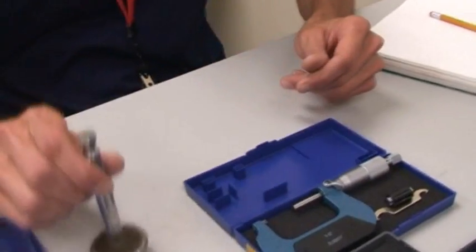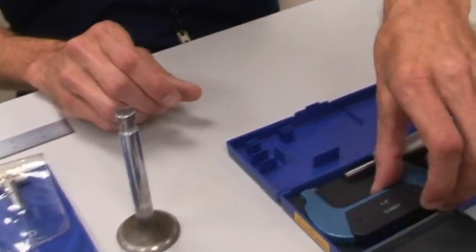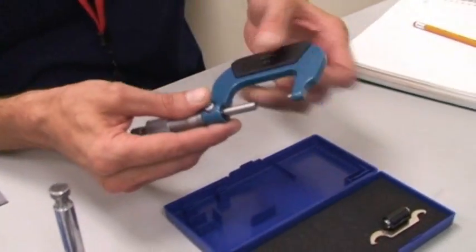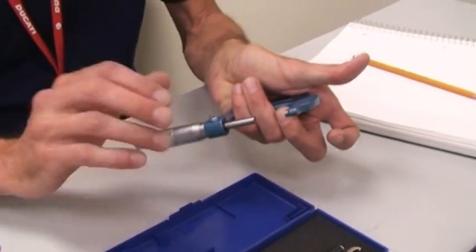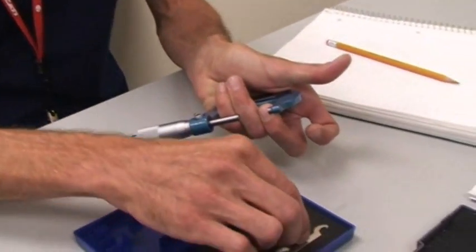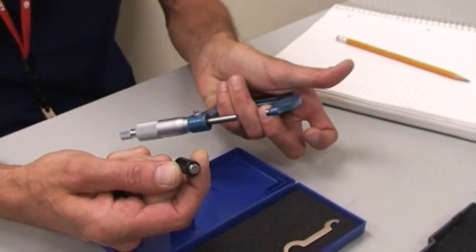Okay. So let's see. Micrometer. Hold it as such. Now, all micrometers should be zeroed with the gauge block that comes with them.